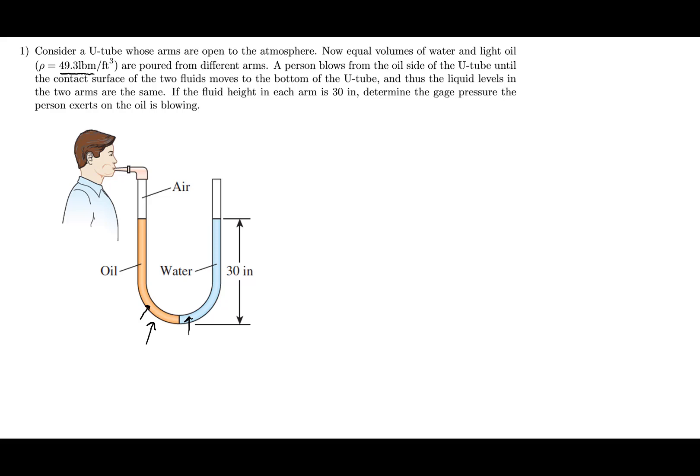A person blows from the oil side of the U-tube until the contact surface of the two fluids moves to the bottom. Someone is blowing into one side, generating enough pressure so that the oil-water interface reaches the bottom of the U-tube. Since equal amounts of oil and water were poured in initially, the liquid levels in both arms are the same — both at 30 inches. The goal is to determine the gauge pressure that the person exerts on the oil.